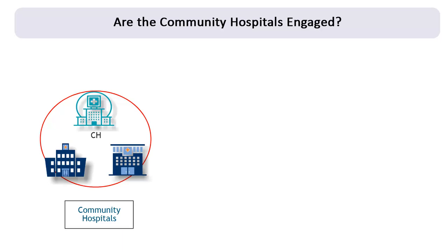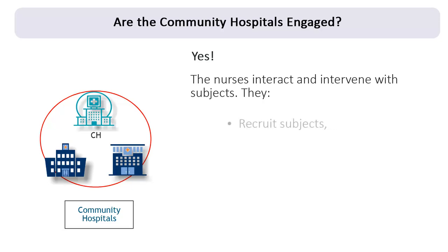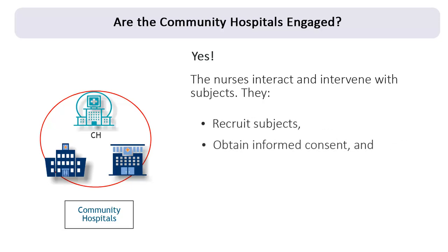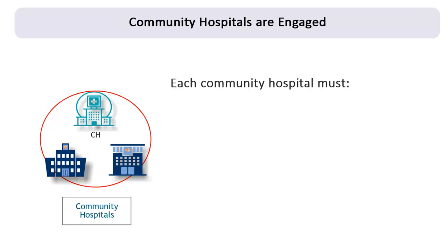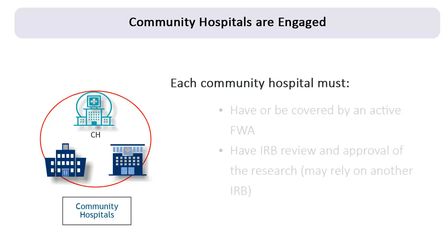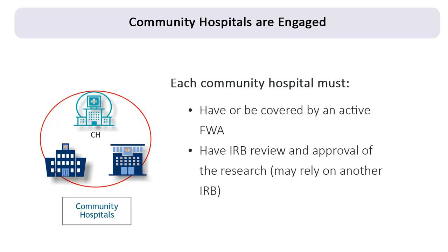Are the community hospitals engaged? Yes. The nurses, as agents of the community hospitals, will recruit research subjects, obtain informed consent, and deliver the study interventions. The nurses' activities do not meet any of the non-engaged scenarios identified in OHRP's Guidance on Engagement of Institutions in Human Subjects Research. Therefore, the community hospitals are engaged. Each hospital must be covered by an active FWA and have its activities reviewed and approved by an IRB. Each hospital may rely entirely or in part on the review of another IRB or a central IRB.